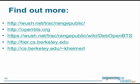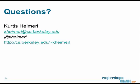Alright, so I'm out of time. You can find out more on all these websites. The dev one is the Debian packages I was talking about. Range Public is the public wiki. OpenBTS.org is the main website. tier.cs is our research group's website, and my own personal website. I'm happy to handle any questions now. Thanks for sitting and listening to all of it.